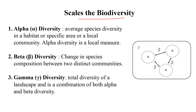Now let's talk about the scales of biodiversity. There are three types: alpha, beta, and gamma. Alpha diversity is very simple — it refers to the average species diversity within a particular community or habitat, in a specific area. It is basically a local measurement of the diversity of species in a particular area or local community.